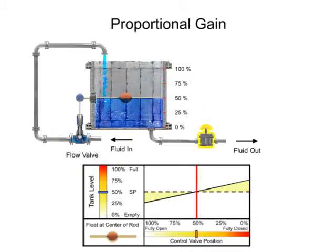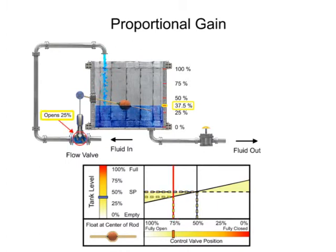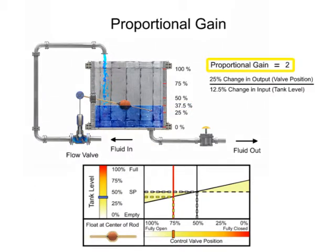Opening the drain valve increases the load demand which causes the tank level to drop by 12.5% or 37.5% full. The float drops and the valve opens 25% which allows more fluid flow to enter the tank. A gain of 2 is demonstrated in this mechanism since the 12.5% change of tank level resulted in a 25% change of valve position.